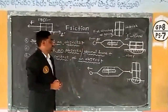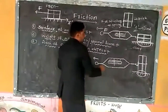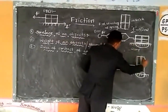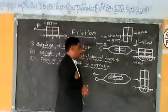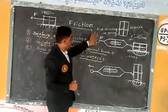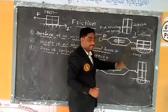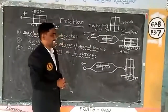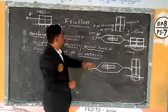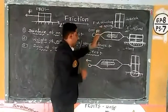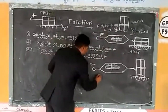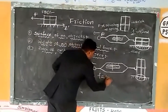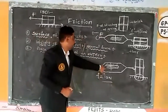Now, in the second case, instead of placing the brick horizontally, we place it vertically on the surface of the floor. The difference between case 1 and case 2 is that in case 1 the object is placed horizontally, and in case 2 the object is placed vertically. We repeat the same procedure and find the maximum limiting frictional force, which again reads 10 newtons on the spring balance.